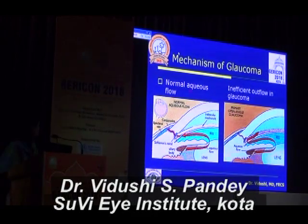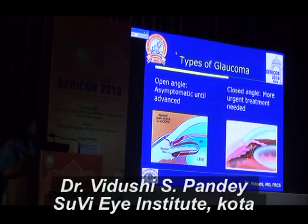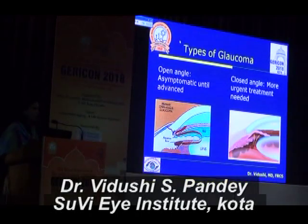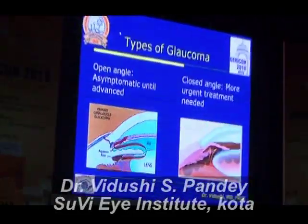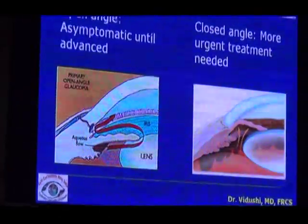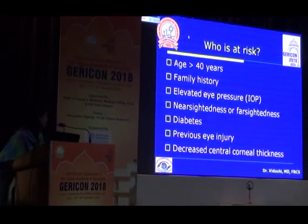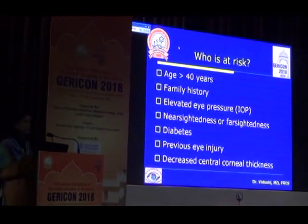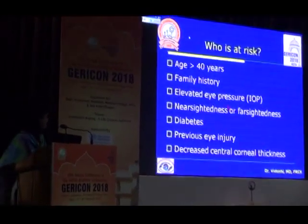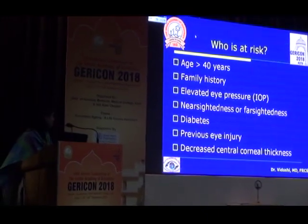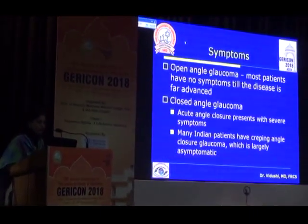Vision loss in glaucoma is permanent, and because there is no apparent improvement, there is poor adherence to treatment. The problem in glaucoma is that aqueous outflow is disturbed. It is of two types: open angle, which is asymptomatic, and closed angle, where patients have sudden pain, headache, and decrease in vision — often confused with migraine. There are patients who continue to get treatment for migraine and only when referred to an ophthalmologist is it found that their headache is due to glaucoma. Risk factors include age above 40, family history, myopia or hyperopia, diabetes, previous eye injury, and low central corneal thickness.